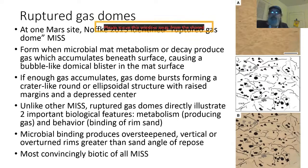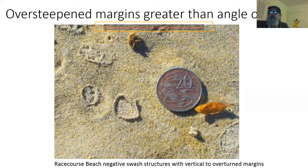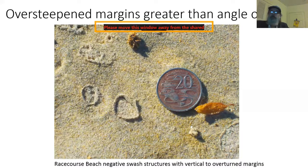Metabolism and behavior are recorded by ruptured gas domes — these are the most convincingly biotic of all microbially induced sedimentary structures. But here's the same sort of thing in a negative swash structure: you can see it looks like a burst bubble or dome with raised rims — in this case vertical or overturned rims — and a crater-like floor. So something that looks like a ruptured gas dome is not necessarily that; there are abiotic processes that can mimic their production.